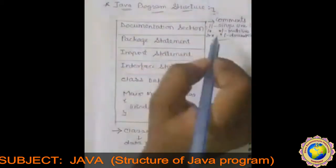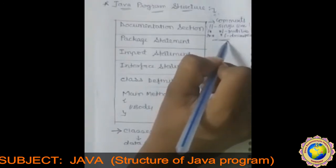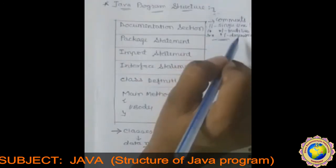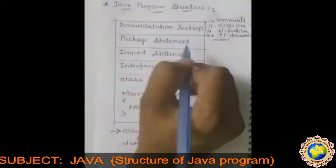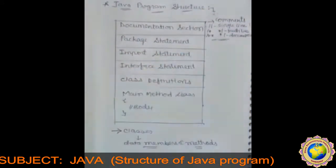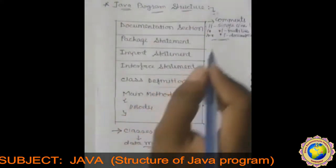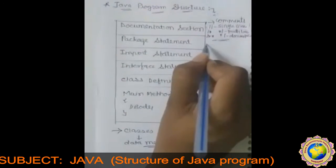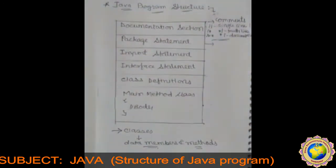Slash-star-star to star-slash is for the documentation section. These first two types of comment we have already seen in C++, and the documentation comment is the new style in Java. The next section is the package statement — the first statement allowed in a Java file is a package statement.